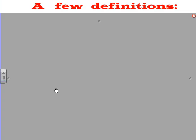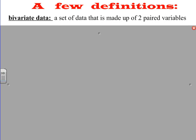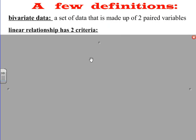Let's take a look at some definitions, some formal definitions before we continue. Bivariate data is a set of data that is made up of two paired variables. A linear relationship has two criteria or two requirements.